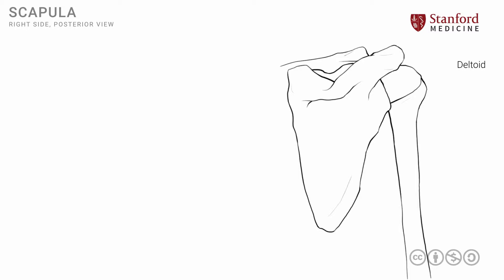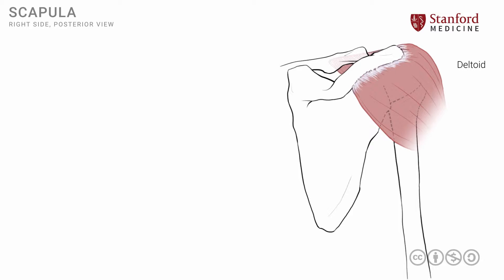The first muscle that we will put on is known as the deltoid muscle. This is a fairly large, well-developed muscle that gives the rounded contour of the shoulder region. There are posterior fibers, anterior fibers, and central fibers. The posterior fibers attach onto the spine of the scapula, the anterior fibers attach on the lateral end of the clavicle, and the central fibers attach onto the acromion process. All three sets of fibers then converge and go inferiorly to attach onto the lateral surface of the shaft of the humerus, in a place often called the deltoid tuberosity.